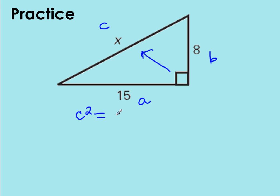The Pythagorean Theorem states that C squared is equal to A squared plus B squared. So I'm going to write out our equation and then substitute in the values. X squared is equal to 15 squared plus 8 squared.